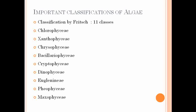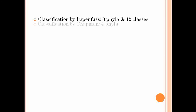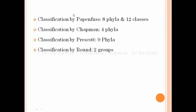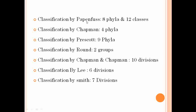Different scientists gave their contributions in the field of phycology by formulating classification systems for Algae. Papenfuss divided Algae into 8 phyla and 12 classes; Chipman into 4 phyla; Prescott into 9 phyla; Round into 2 groups; Chapman and Chapman into 10 divisions; Lee into 6 divisions; and Smith into 7 divisions.